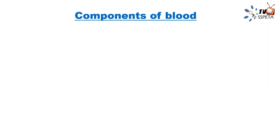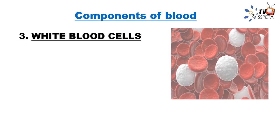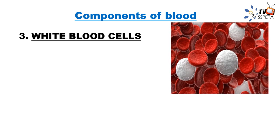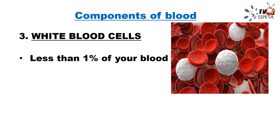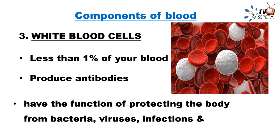The third component of blood is white blood cells. They form less than 1% of your blood — so very few — but they have a major function. White blood cells produce antibodies that protect the body. They kill bacteria and viruses, preventing us from getting infections.